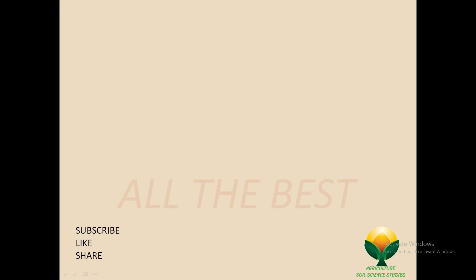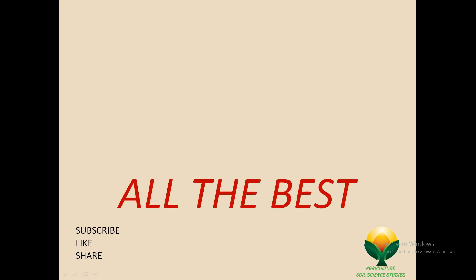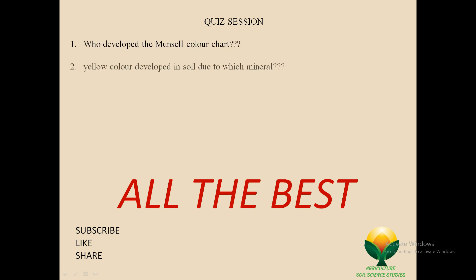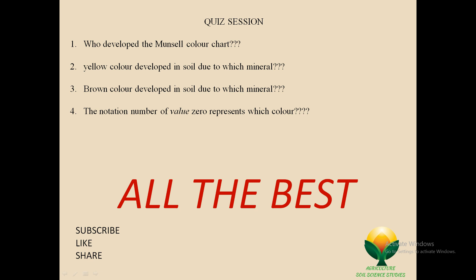All the best friends. Please like and subscribe to my channel. Here are some questions for you to answer in the comments: First, who developed the Munsell color chart? Second, which mineral causes yellow color in soil? Third, which mineral causes brown color in soil? Fourth, the notation number 0 for value represents which color? All the best!